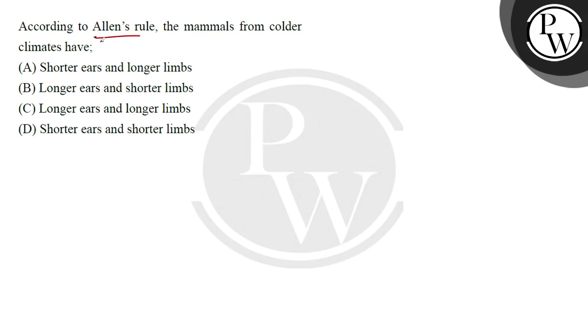So we've been asked, according to Allen's rule, which mammals are in colder climates and what do they have. The mammals in colder regions have short ears and short limbs.